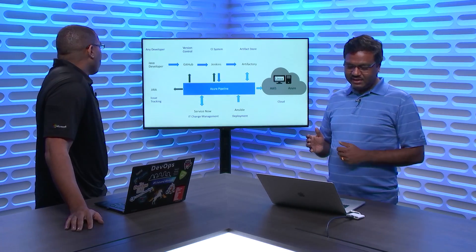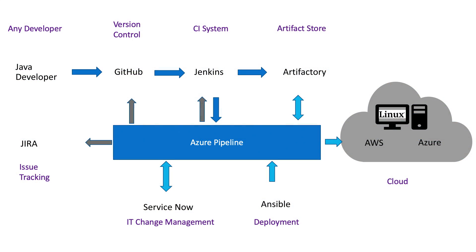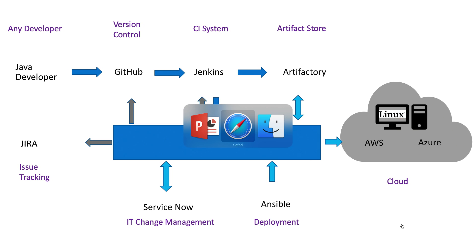Azure Pipelines, once it does the deployment, can interact with GitHub, Jenkins, and Jira, and show you the exact same traceability that you get if you are using the full DevOps suite or a set of different products. Let's jump into the demo.